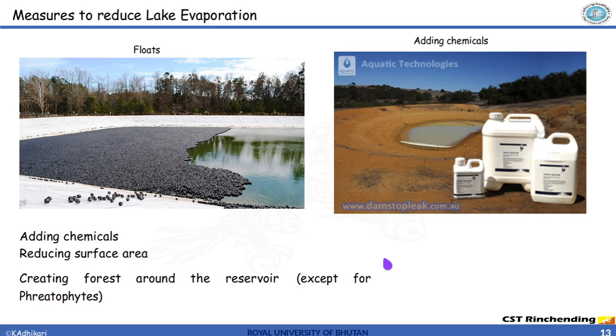Moving on, let's discuss a few measures to reduce lake evaporation. As we know if we cover the surface with some kind of floating object then water cannot evaporate directly. So here is one method that is float or by adding some chemical over the liquid surface the evaporation can be checked.